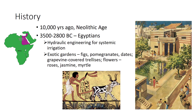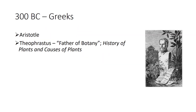Typical elements found in Egyptian gardens were pools for fish, trees bearing figs, pomegranates and dates, grapevine-covered trellises, and beds of flowers including roses, jasmine, and myrtle. The Greeks were involved in agriculture in only a minor way; however, they did dedicate much attention to the study of botany and were concerned about the nature of things.